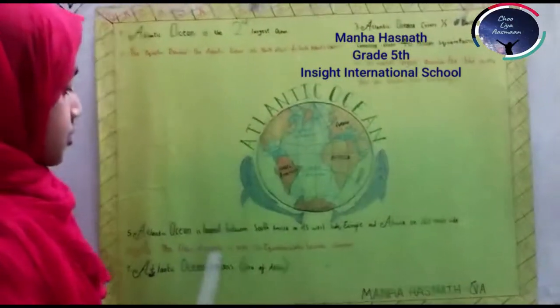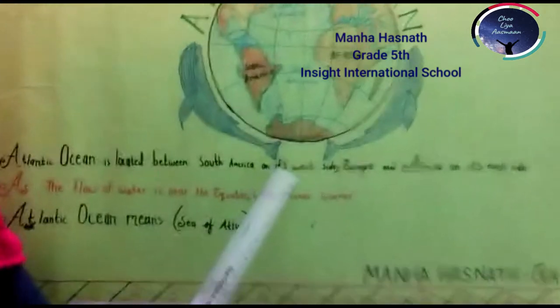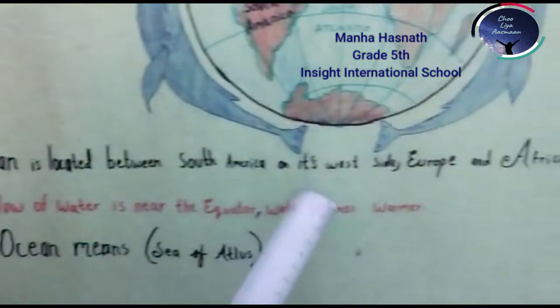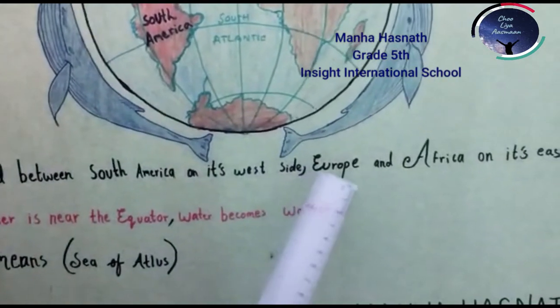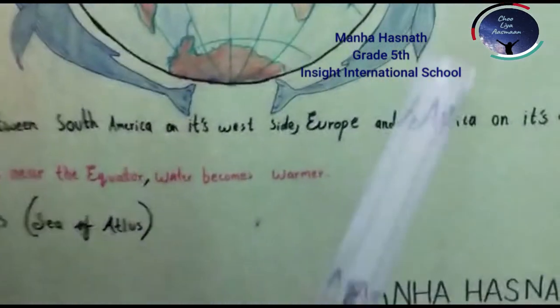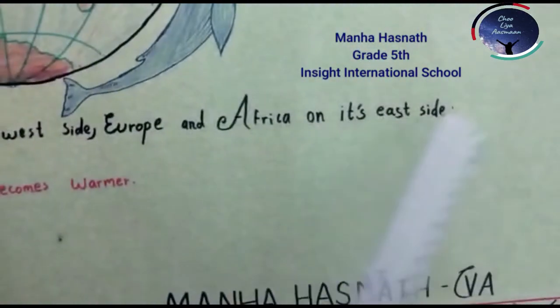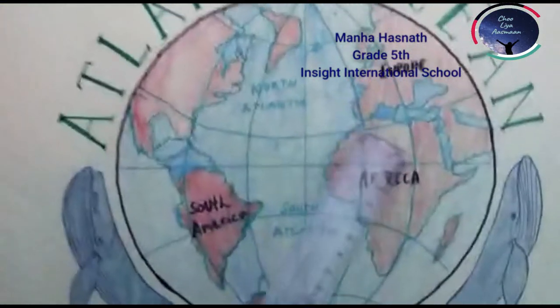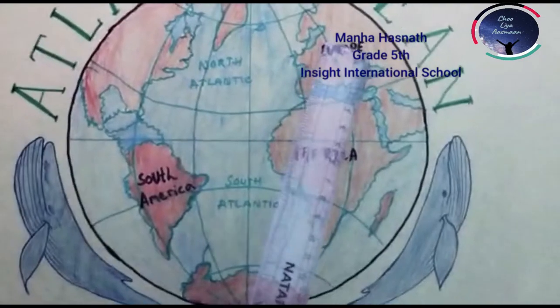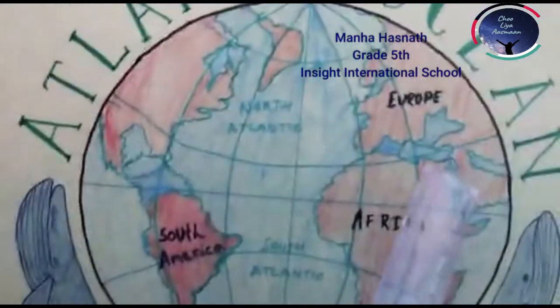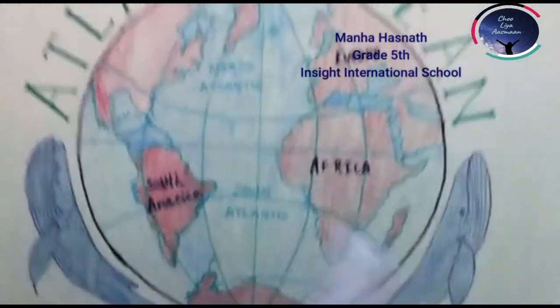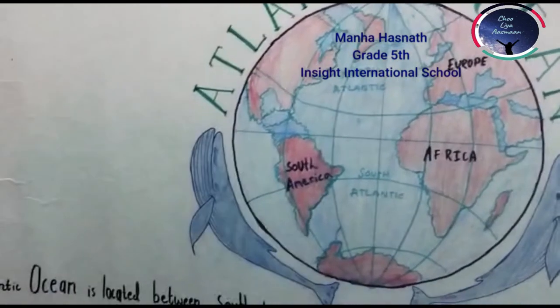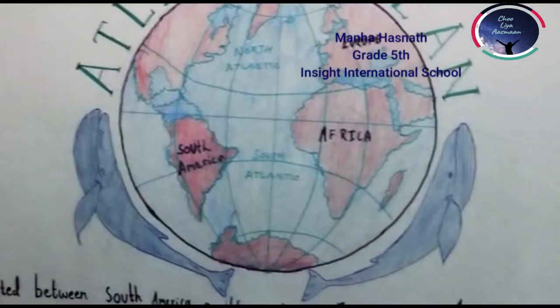The Atlantic Ocean is located with South America on its west side, and Europe and Africa on its east side.